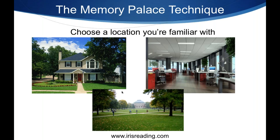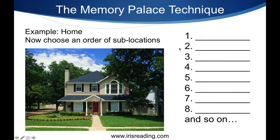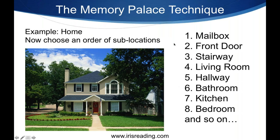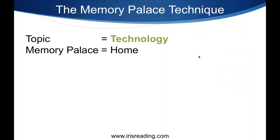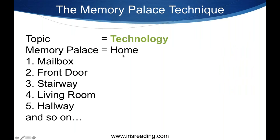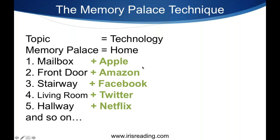Basically, you choose a location you're familiar with — it could be your home, your workplace, your campus. It's best to start with wherever you're living right now. You choose an ordered walkthrough of your home: there's the mailbox, front door, stairway, living room, hallway, and so on. This walkthrough of your home is going to be associated with topics. If topic number three is associated with the stairway, you just picture that topic with a visual reference at the stairway. Let's say the topic was technology and the memory palace is your home — these are the first five locations in your walkthrough and you have to remember these first five things.